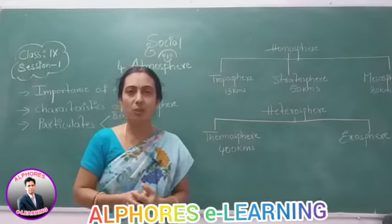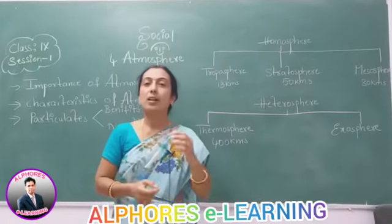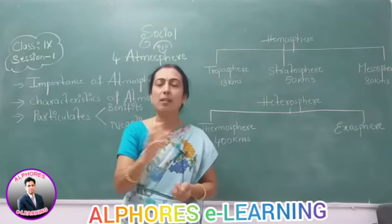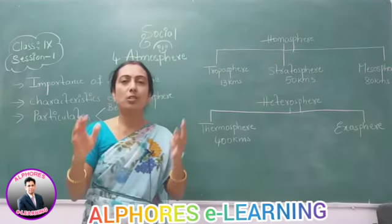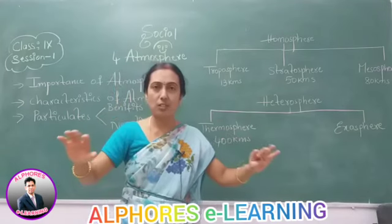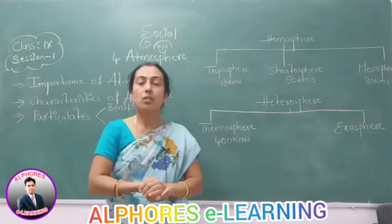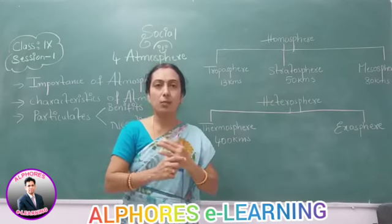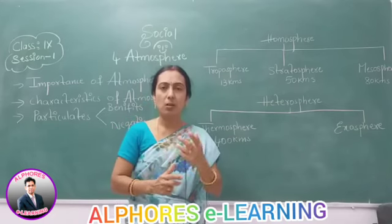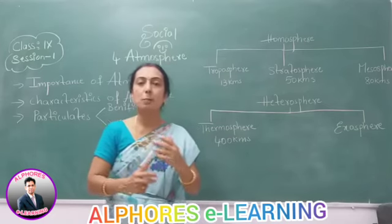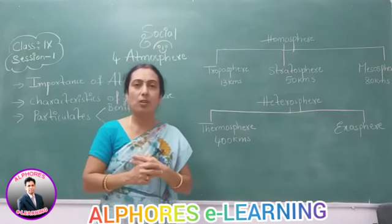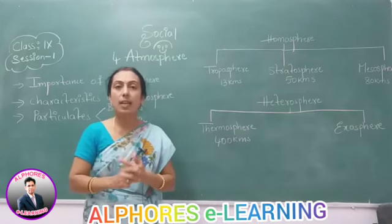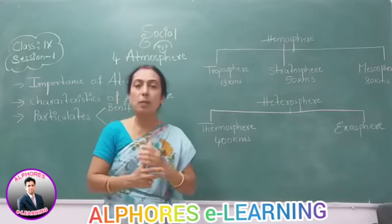Let me recollect that for you once again. Earth is divided into 4 natural realms — realms are regions that possess common features. The first one is lithosphere, which you have completed. Second is hydrosphere. Third is atmosphere, and the next one is biosphere.